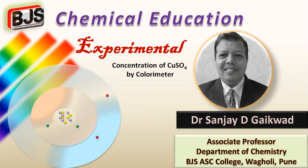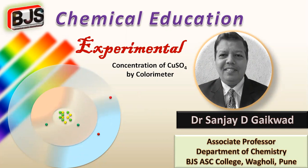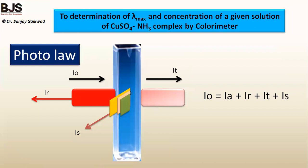Welcome to Chemical Education. In this video we are going to see the experimental work related to the colorimeter — specifically to determine the concentration of copper sulfate by using the colorimeter. The title of the experiment is: determination of lambda max and concentration of a given solution of copper sulfate ammonia complex by colorimeter.